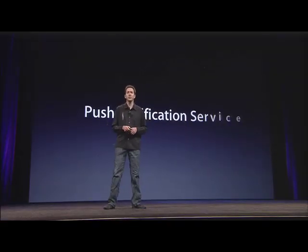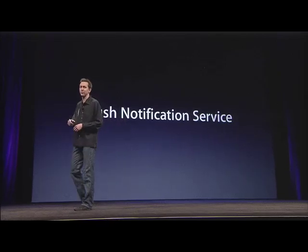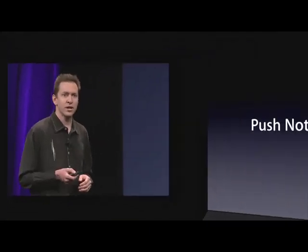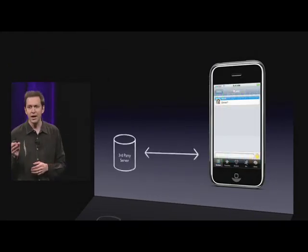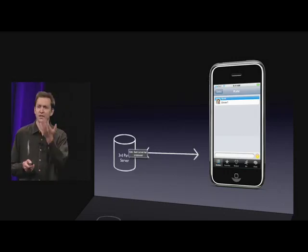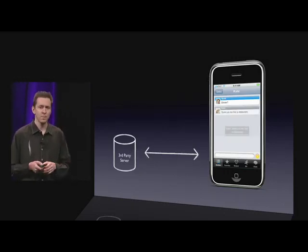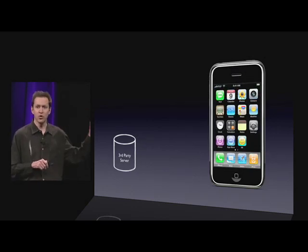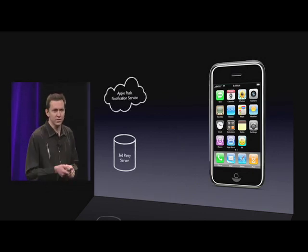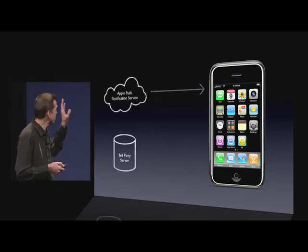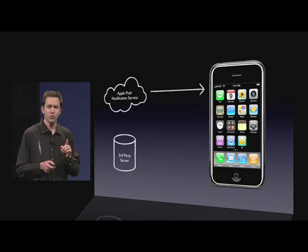We have come up with a far better solution: we are going to provide a push notification service to all developers. Here's how it works. Let's say you're running an application like an instant messaging application. As you run it, it's connected to your server, so you can send across whatever messages you want. But when the user quits the application, there's no longer this connection to the server. That is where the push notification service comes in — we will maintain a persistent IP connection right to the phone.